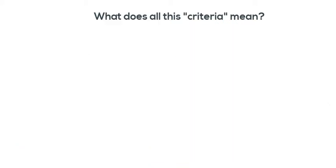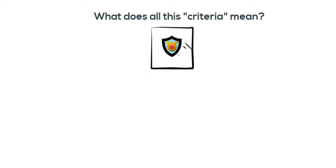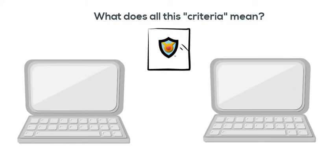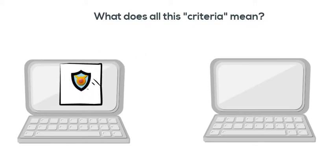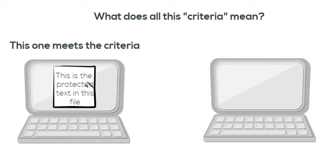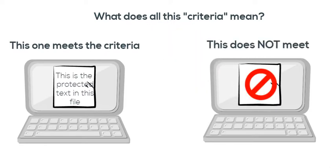Criteria are used to define access requirements to an Amulet-protected digital asset, meaning if a digital environment meets all the criteria, then access is granted to the asset. If any criteria are not met, access is denied. That's really all we're talking about here.